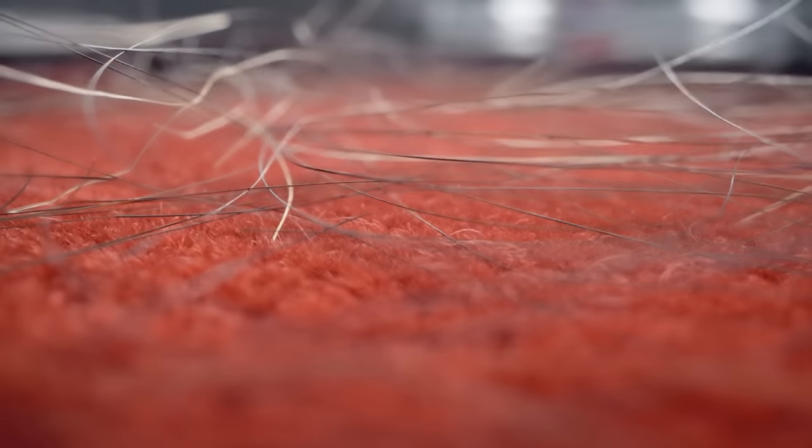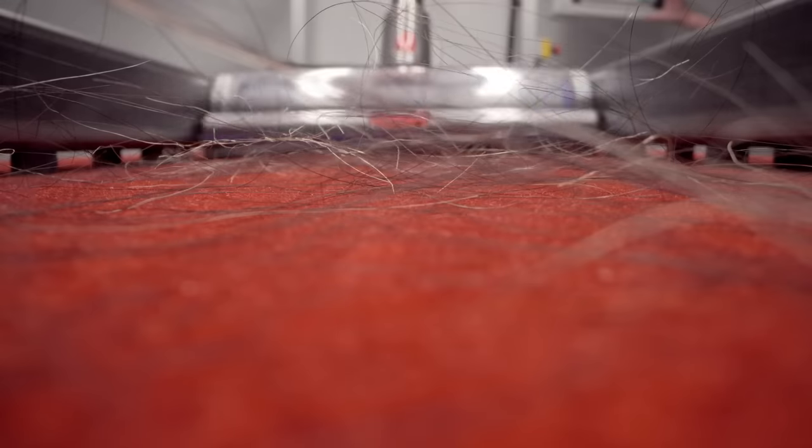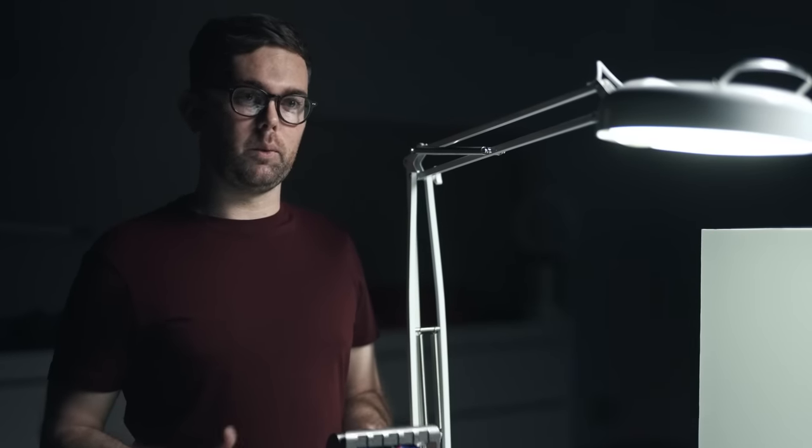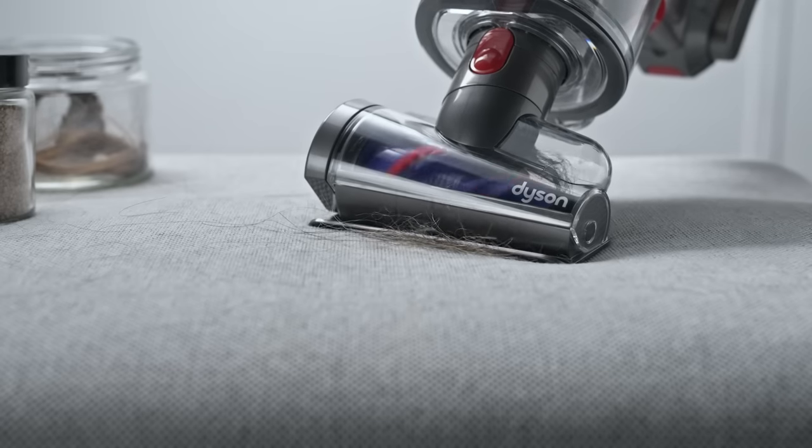Pets don't always just walk around on carpets. They can also jump up on sofas and onto cushions and we need a way of cleaning this. And our hair screw tool is perfect for it.